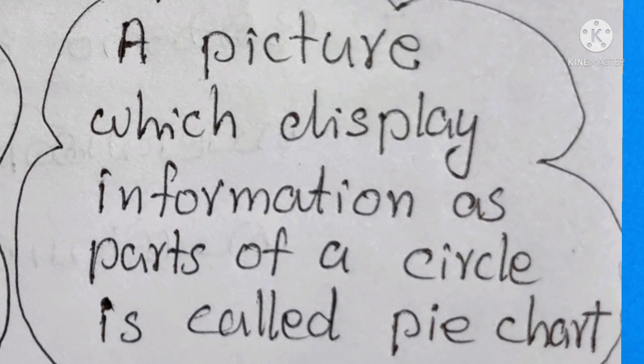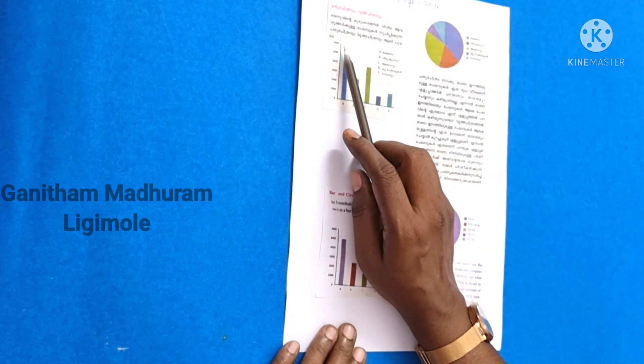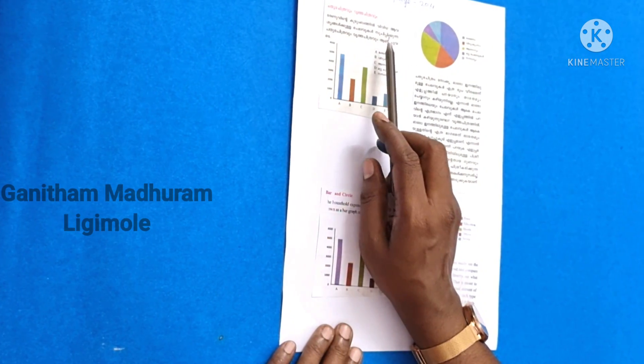A picture which displays information as parts of a circle is called a pie chart. Now let's talk about the parts of food and charity.